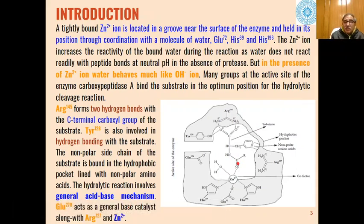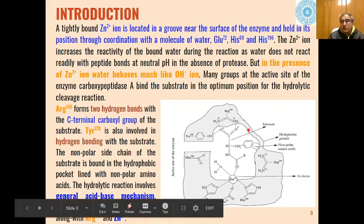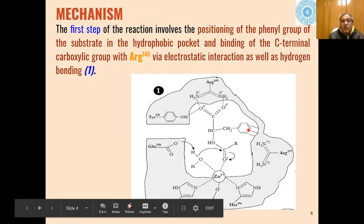The reactions involved in the hydrolysis by carboxypeptidase A are generally general acid-base mechanism. Glutamic acid 270 will act as a general base, along with arginine 127, and Zn2+ ion will act as cofactor in this case.